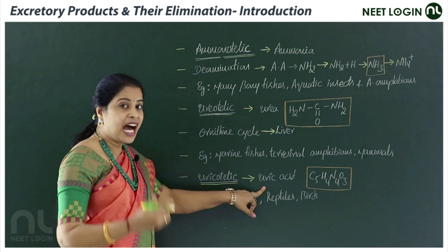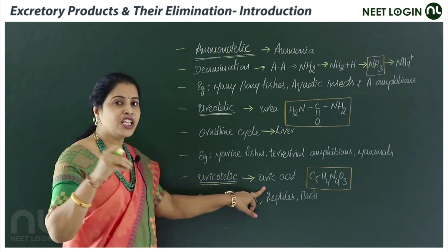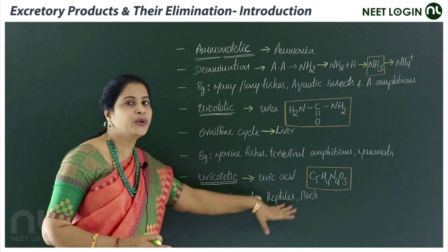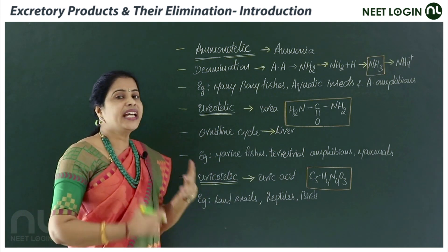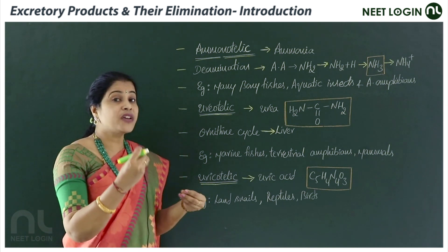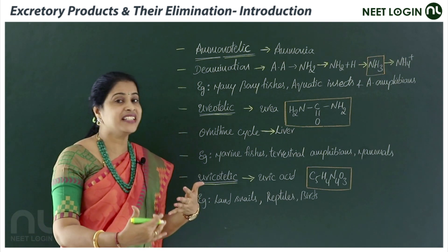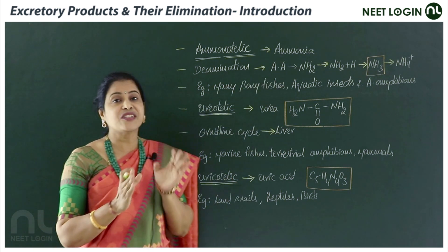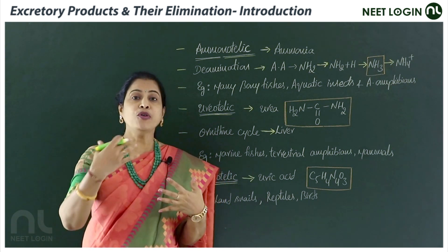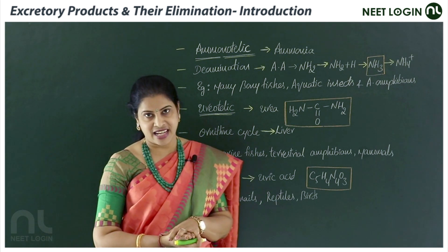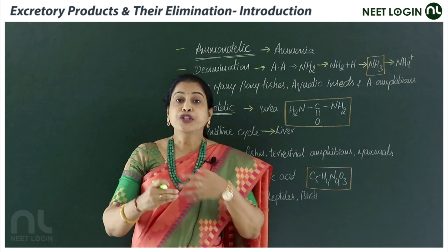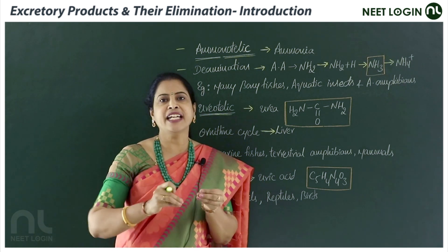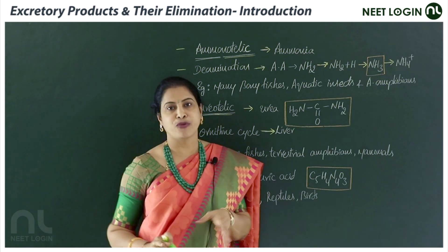Animals that excrete uric acid as their chief nitrogenous waste are called uricotelic animals, and that phenomenon is uricotelism. Uric acid is the least toxic of the three — ammonia is highly toxic, urea is moderately toxic, and uric acid is least toxic. Uric acid is insoluble in water, and more energy is required to synthesize it. Because it is insoluble, it can be eliminated as dry pellets with very little water.